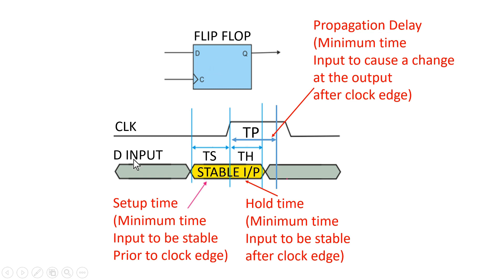Consider a simple D flip-flop with clock and D as inputs. D must be stable for some minimum time before the clock edge — this is setup time — and this forms the basis of the minimum logic low width requirement. So minimum logic low width equals the setup time of the flip-flop. Similarly, D must be stable for some minimum time after the clock edge — that is hold time. There is also propagation time, defined as the minimum time for D to reach Q after the positive clock edge. Usually propagation time is greater than hold time, but in some architectures hold time can be greater.